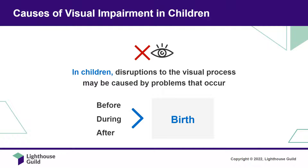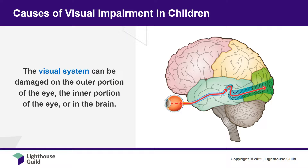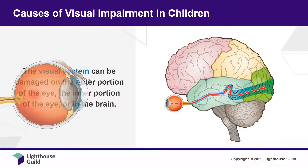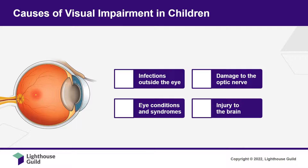The problems may be inherited or caused by disease, trauma, or injury. The visual system can be damaged on the outer portion of the eye, the inner portion of the eye, or in the brain. Let's learn more about the causes of visual impairment in children.